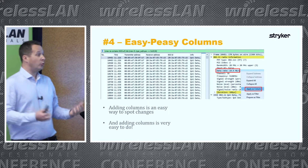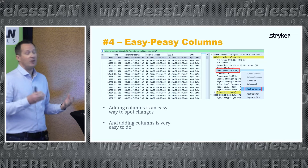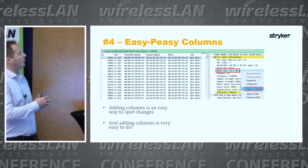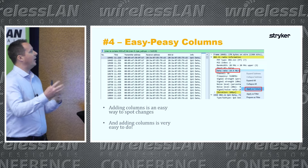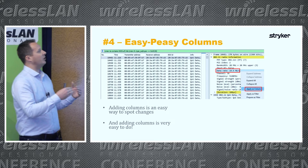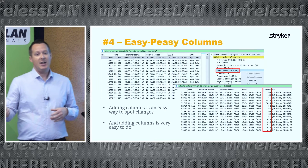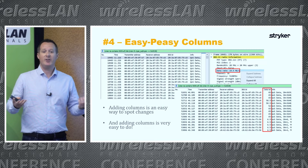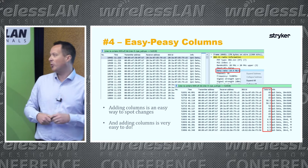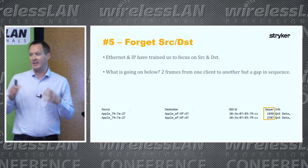Tip number four: columns are really easy to apply in Wireshark and they're very powerful for seeing how the environment is changing. Find any frame containing the parameter you want — something generic like data rate or frequency appears in every frame. Right-click the parameter and select 'Apply as Column' and it instantly adds that column to your view. For example, applying the data rate column lets you very quickly see if your data is rate-shifting and investigate why.